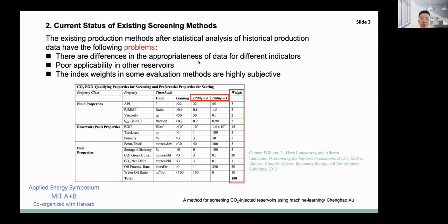The current screening method is the appropriate distribution range of some reservoir or fluid index data obtained by statistical analysis of historical production data of each oil field. All NGO development companies in their development blocks combine this with the physical properties of some oil layers.